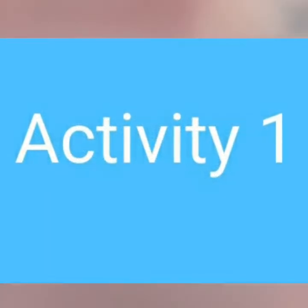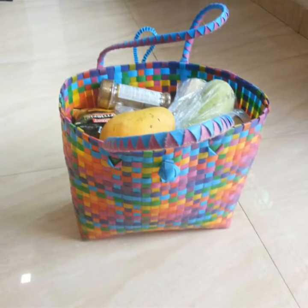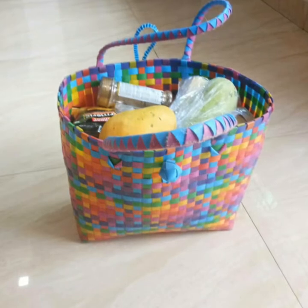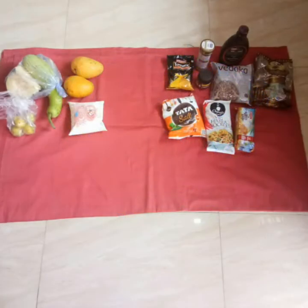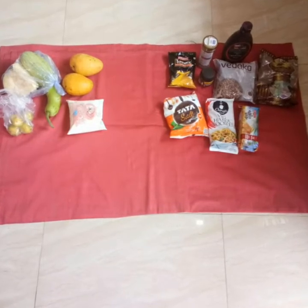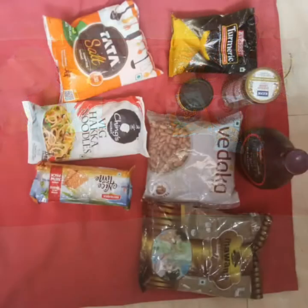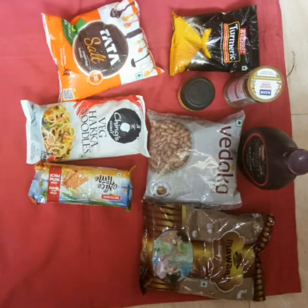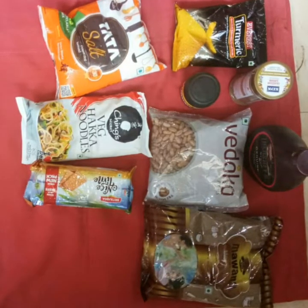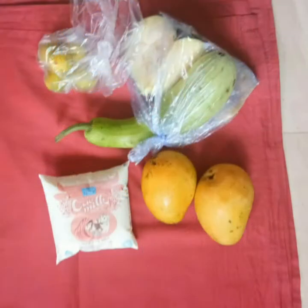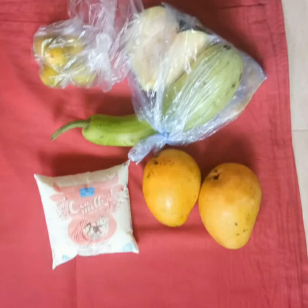Activity 1: This colorful basket is a shopping basket with grocery items purchased for home. The items are divided into two groups. On the right — food items that can be kept outside — are salt, noodles, biscuits, pulses, coffee, turmeric, and spices. On the left — food items to be kept in the fridge — are mangoes, a packet of milk, and some green vegetables.